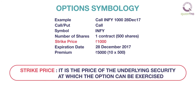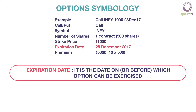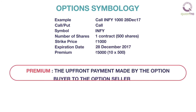Strike price is the price of the underlying security at which the option can be exercised. Expiration date is the date on, or before, depending on the type of option, on which the option can be exercised. Premium is the upfront payment made by the option buyer to the option seller.